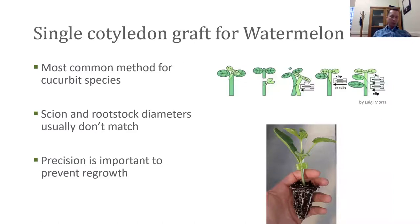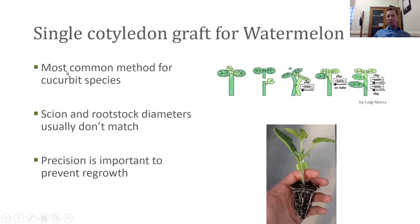Let me talk about watermelon grafting. There are also multiple ways to do this — hole insertion, side grafting, approach grafting, single cotyledon grafting, and even double grafting. We're using the single cotyledon method, which is most common for cucurbit species. In this case, the rootstock and scion diameter never match — the watermelon is always a little smaller than the squash, and that's totally fine. It's very important in watermelon grafting that we're precise, so that we don't get rootstock regrowth.